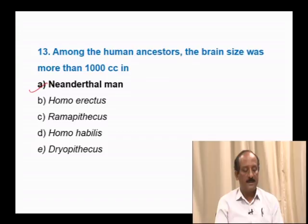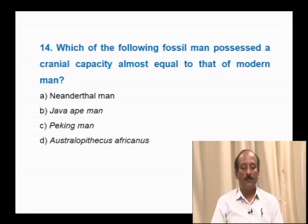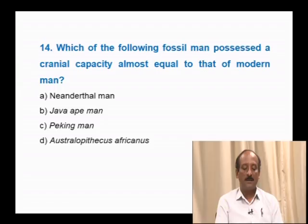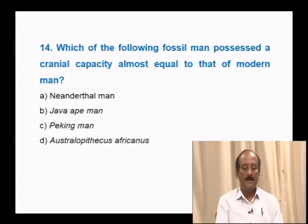Question number 14: Which fossil man possesses a cranial capacity almost equal to that of modern man? Options: Neanderthal man, Java ape man, Peking man, Australopithecus. Modern man, Homo sapiens, has a cranial capacity of around 1500 cc and Neanderthal man has 1400 cc. Hence, the fossil man Neanderthal possesses cranial capacity almost equal to modern Homo sapiens. The correct answer is Neanderthal man.